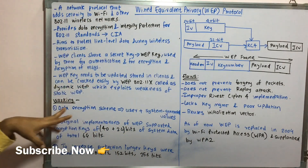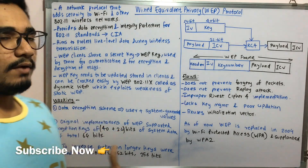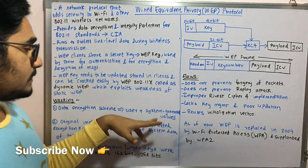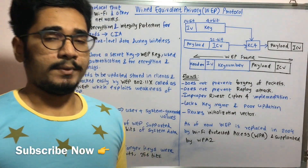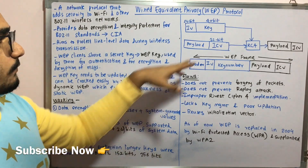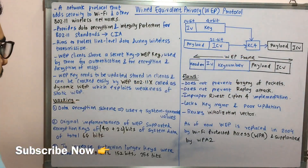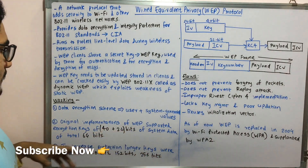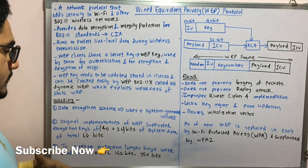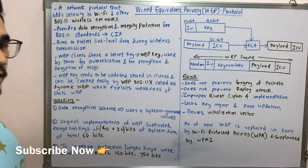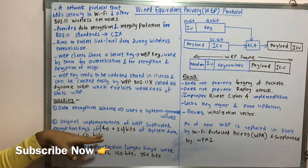The working of WEP involves a data encryption scheme where you have user-generated values as well as system-generated values. Those two values are concatenated or combined and then applied to the RC4 algorithm — a stream cipher — through which the encrypted output is generated. The original implementation of WEP supported encryption keys of 40 bits plus 24 bits of system-generated bits, making a total of 64 bits.